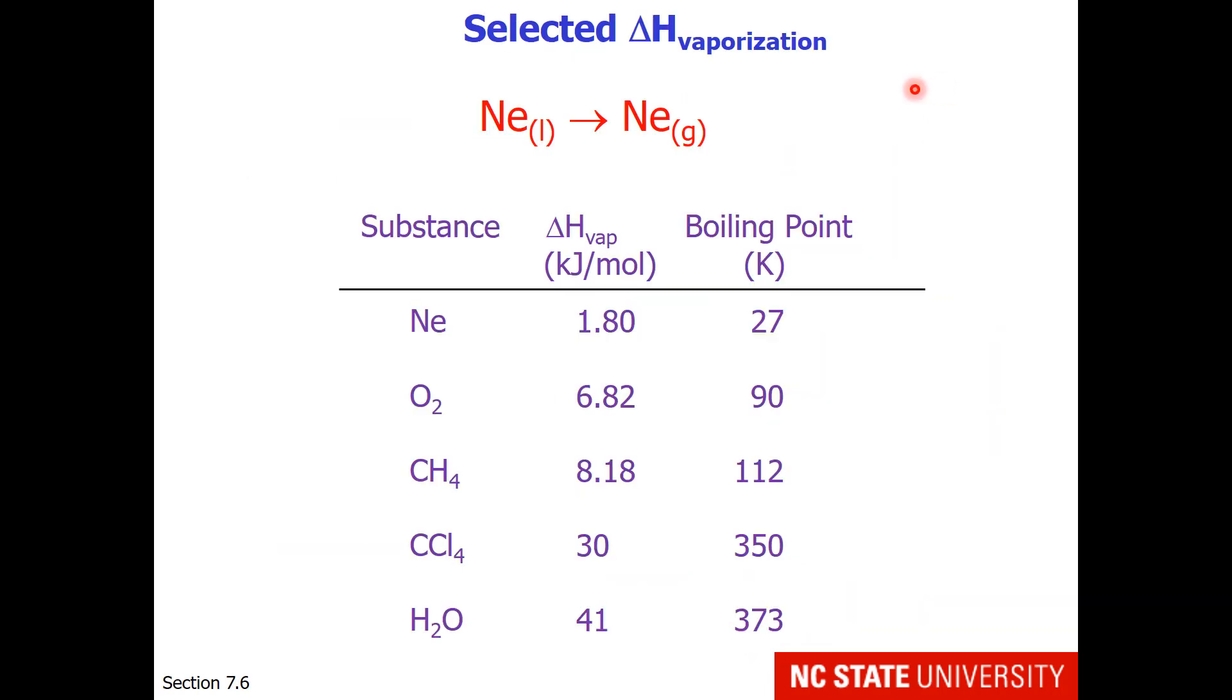So once again, here is a selection of different atoms and molecules and their enthalpies of vaporization and boiling points. We're talking about the phase change from liquid to gas. As you can see, neon has a very low enthalpy of vaporization and a very low boiling point, but as one increases the mass and the intermolecular forces, the enthalpy of vaporization increases and the boiling point increases.